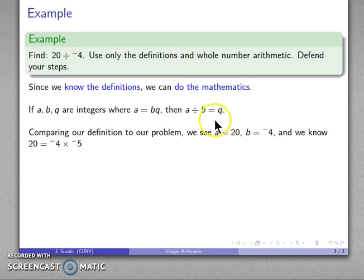That says a is 20, b is negative 4, and what I'd like to do, I'd like to write a as b times something. Well, I happen to know 20 is negative 4 times negative 5.